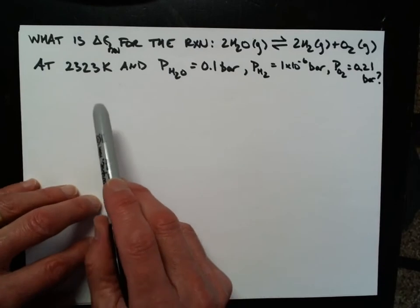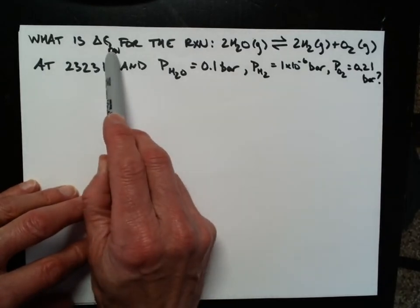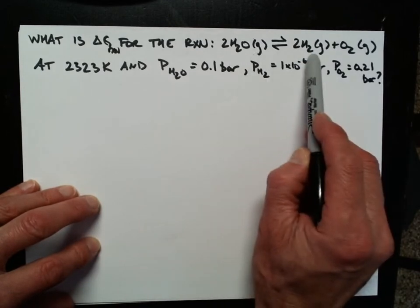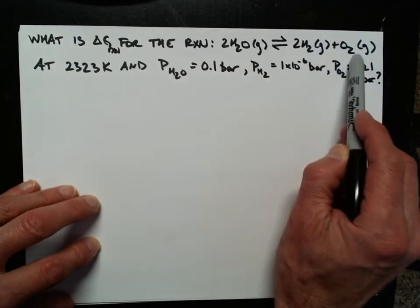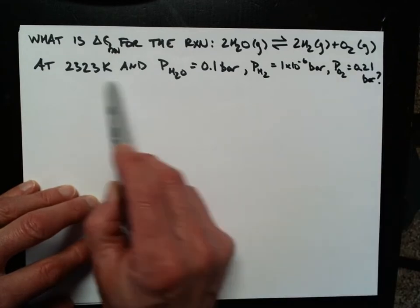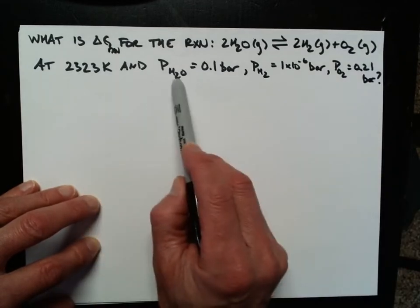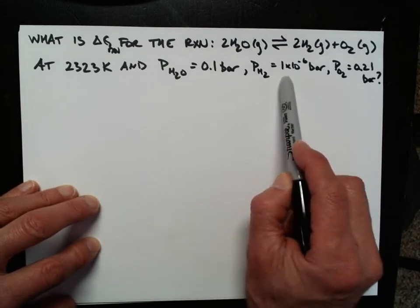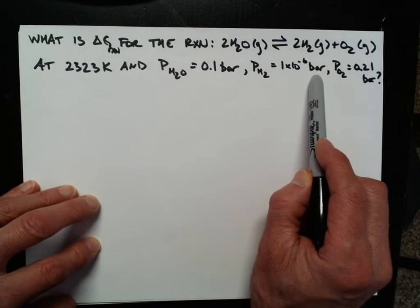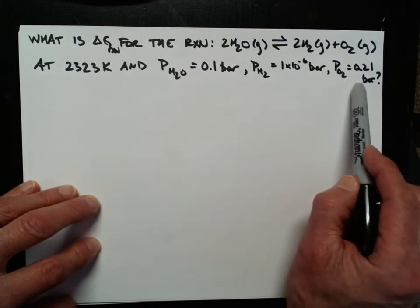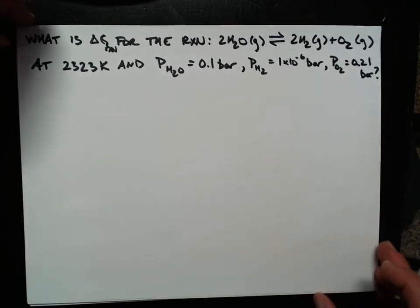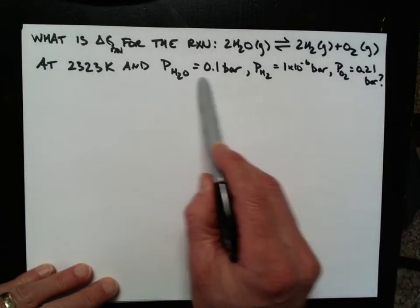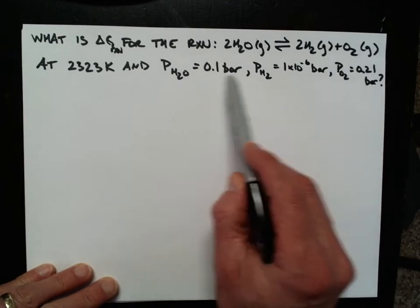All right, we're now going to use this newfound equation to try to find the delta G for the reaction. So again, two gaseous water molecules going to two gaseous hydrogen molecules and one gaseous oxygen molecule at 2323 Kelvin, a pressure of water at about 0.1 bar, a pressure of hydrogen at 1 times 10 to the negative 6th bar, and a pressure of oxygen at 0.21 bar. So this is clearly not at standard conditions because the pressures are not all one bar.